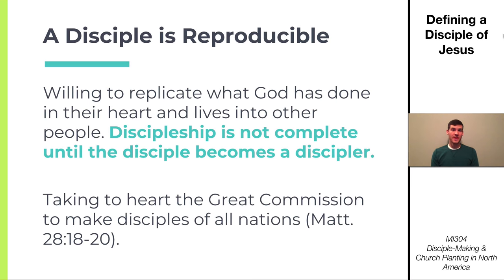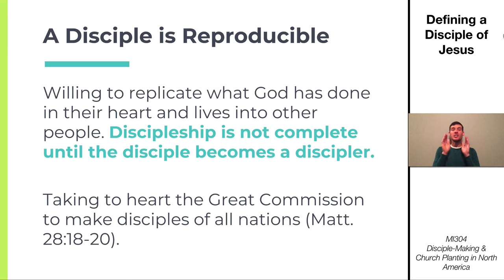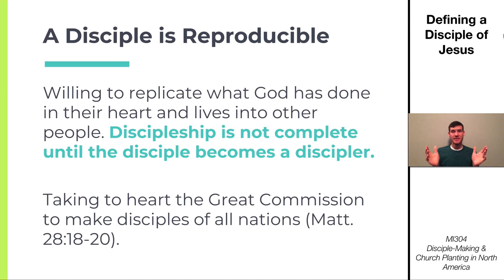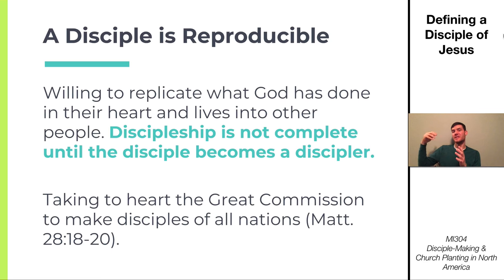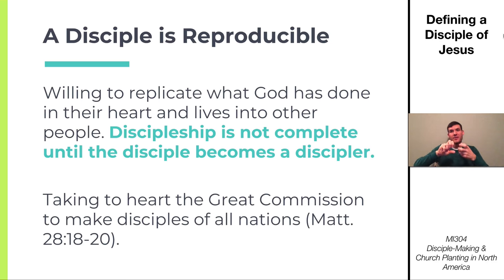A disciple is also reproducible — willing to replicate what God has done in their lives into other people to make more disciples. This is key: discipleship is not complete until the disciple becomes a discipler. You can't near completion if the person being discipled doesn't become a discipler of others. That is when we see sanctification happen — when that disciple doesn't just soak things up like a sponge, but is wrung out into the life of another person by reproducing the gospel.